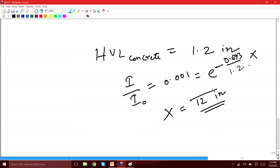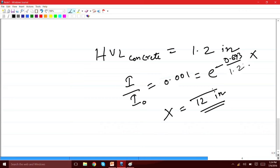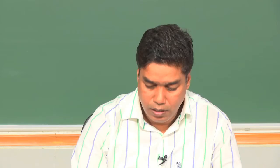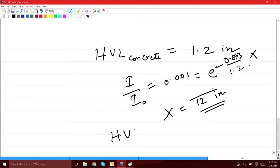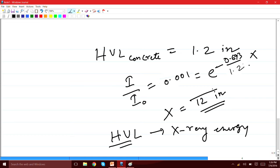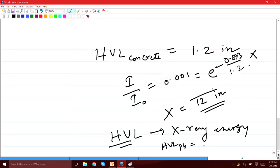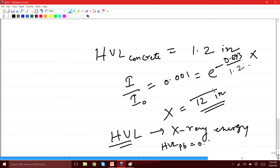So for lead you need only 1.6 inches, but for concrete you need 12 inches for the same shielding. This is how the thickness for a given material can be calculated for shielding purposes based on HVL. It is also important to note that HVL depends on the x-ray energy because mu is dependent on x-ray energy. The HVL of 0.16 inches for lead was specifically for 300 kV x-ray energy, since it is calculated based on mu at 300 kV.